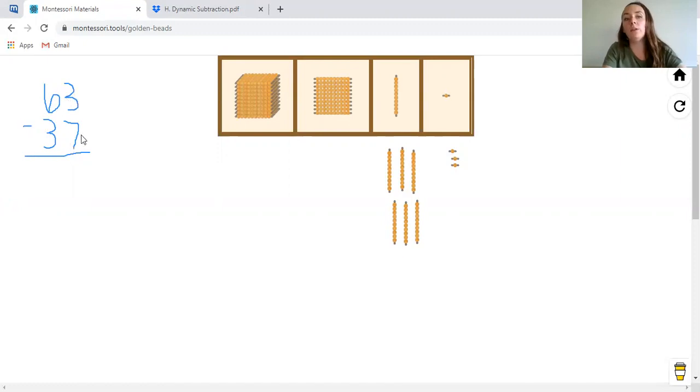And we're going to take away 37. Well, we look at our units and we realize that we cannot take seven from three. So we're going to have to borrow. So what we're going to do is we're going to borrow from our 10 spots. So we're going to borrow a 10 here.